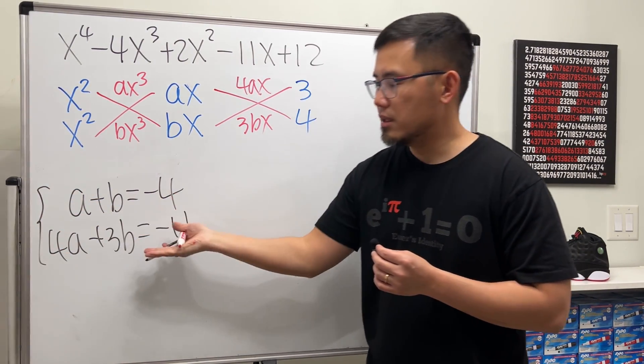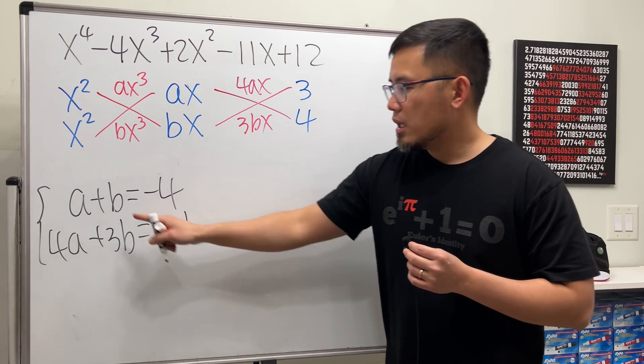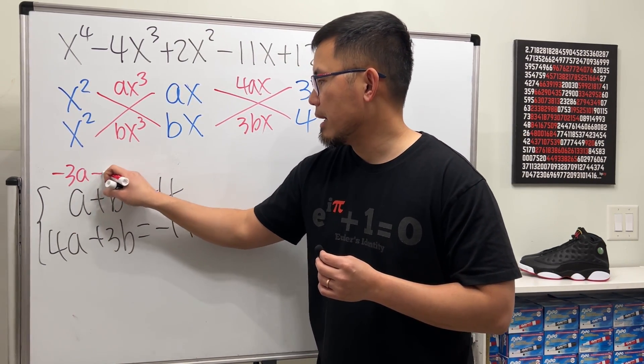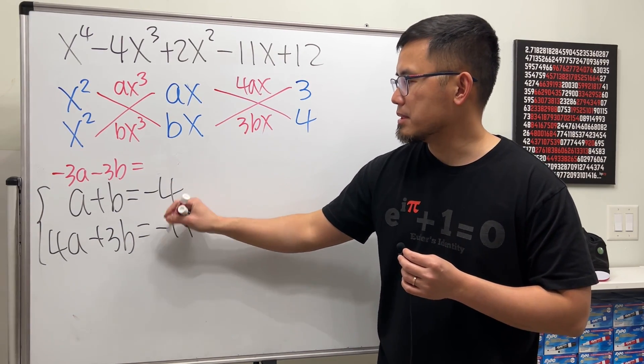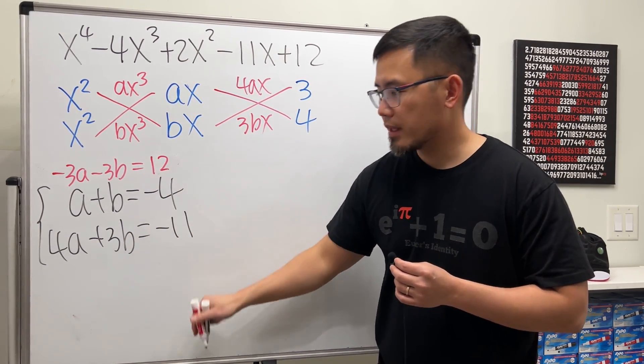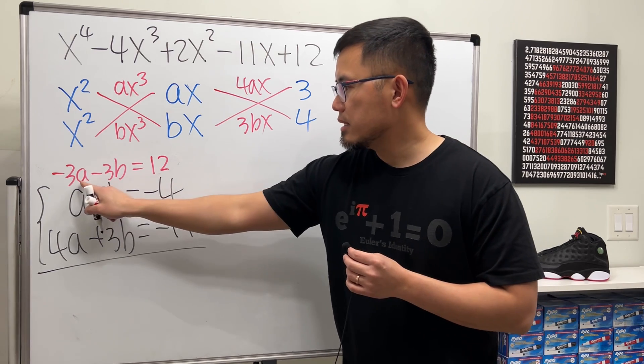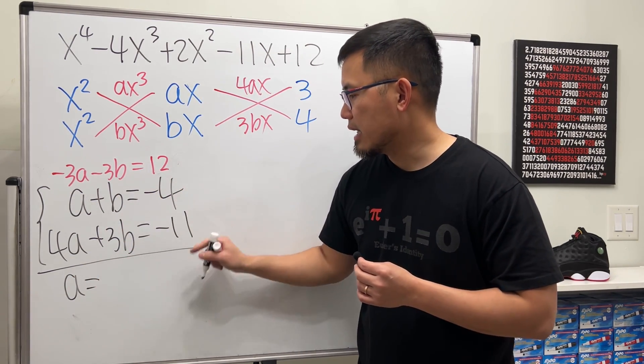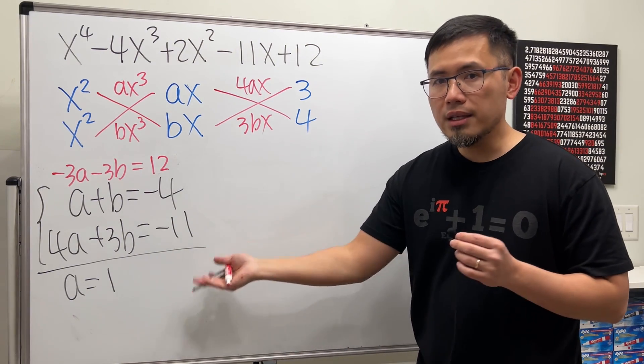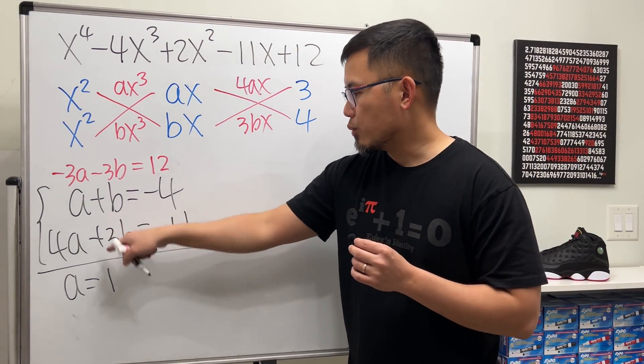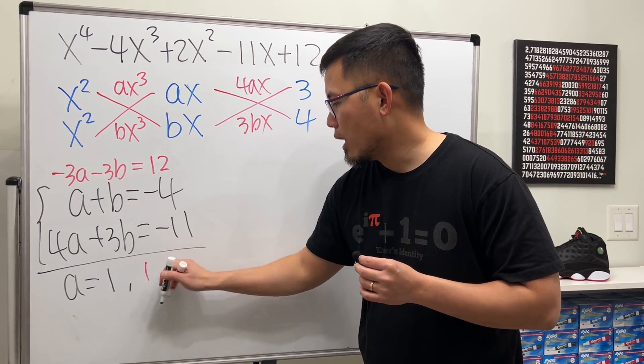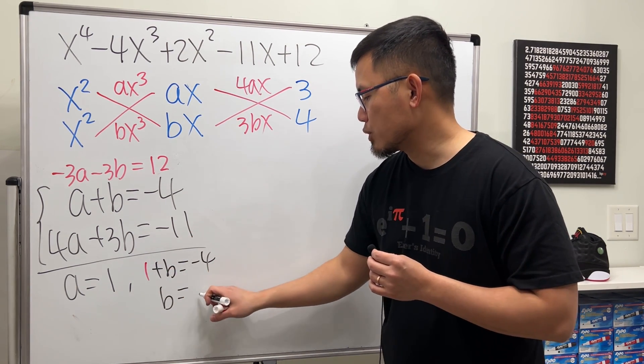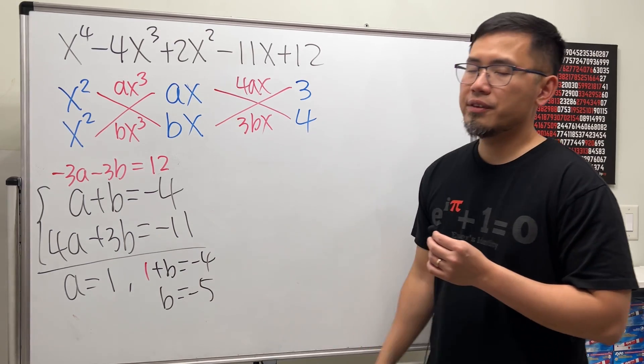Now let's try the system equations. I will multiply everybody by negative 3. So negative 3a minus 3b equals negative 3 times this is plus 12. Combine these two equations. This and that is a. This and that is 0. And then this and that is just equal to 1. So a is equal to 1. And put the 1 back here. We know 1 plus b equals negative 4. Meaning, b equals, after we subtract 1 on both sides, we get negative 5.